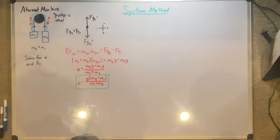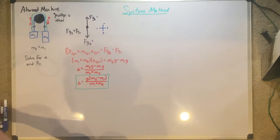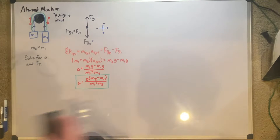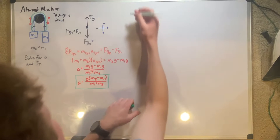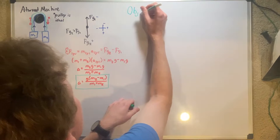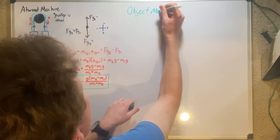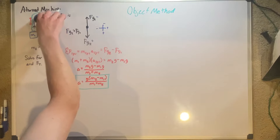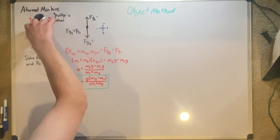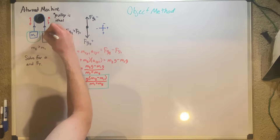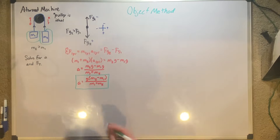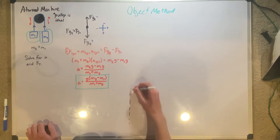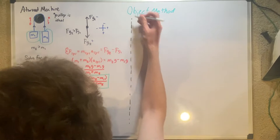Now we need to find the force of tension. No longer will we use the system method for force of tension — we will now use the object method. Our system is now these two objects separated. Let's create a free body diagram that would represent our object method. We actually have to do two, because we have two separate things.